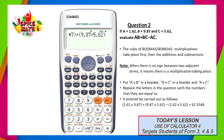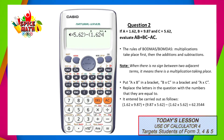Next, we will put a subtraction sign, followed by an open bracket, and in this bracket we will have A, which is 1.62, multiplied by C, which is 5.62. Once the bracket is closed, all that's left to do is press the equal sign. Once we do this, the calculator will return an answer of 62.3544, which is the correct answer. So, if we were to evaluate AB plus BC minus AC, with A being 1.62, B being 9.87, and C being 5.62, our answer would be 62.3544.